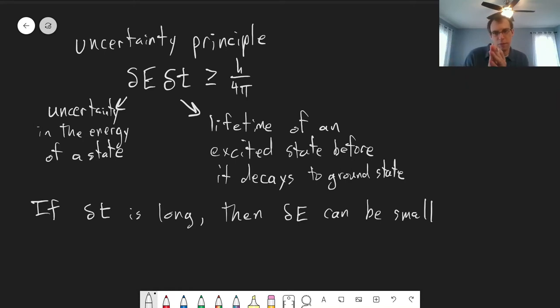The different energies that can be observed, because this delta E translates directly into the width of the lines that we see.